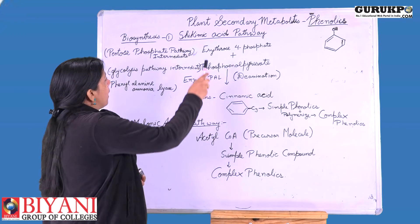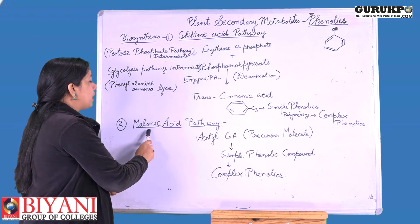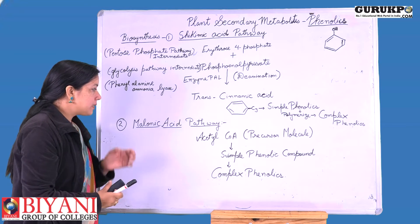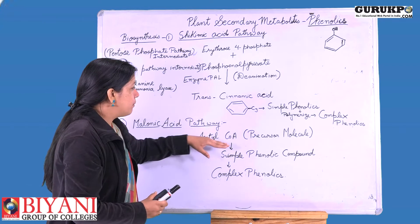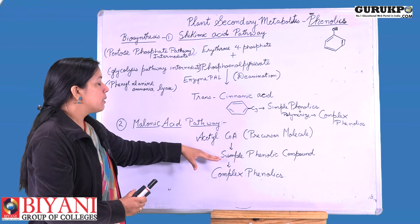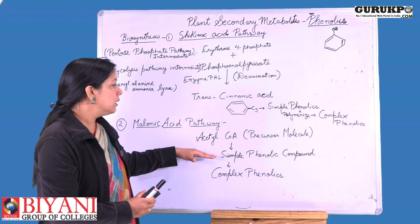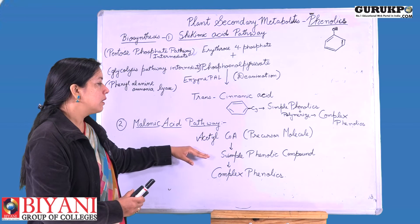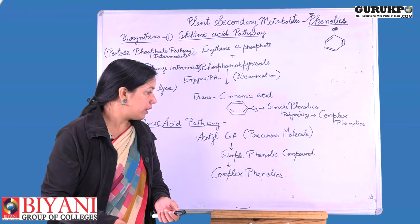Phenolics are also synthesized by the second pathway known as the malonic acid pathway. In this pathway, acetyl coenzyme A, as a precursor molecule, is converted to cinnamic acid to produce simple phenolics, which then polymerize to form complex phenolics.